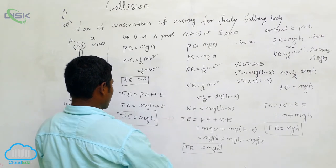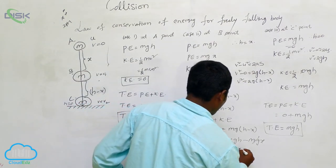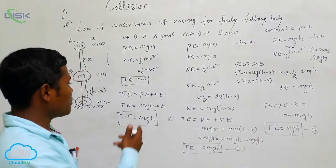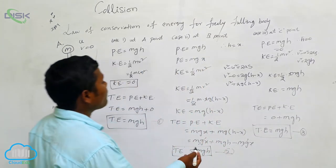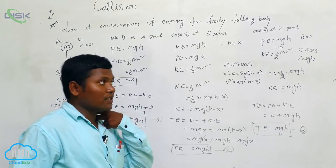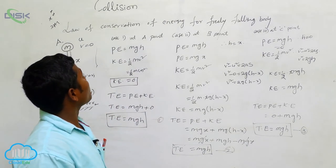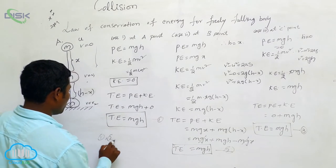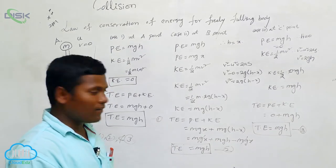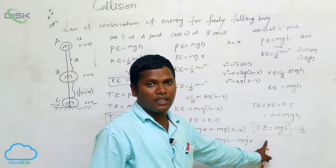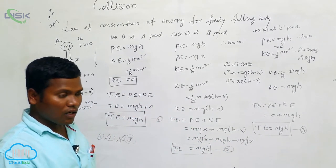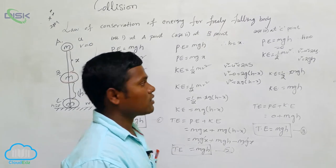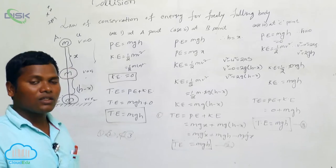From equations 1, 2, and 3, if you observe carefully, at every moment the energy is conserved. This is the conclusion for the law of conservation of energy for a freely falling body — the energy is conserved at every point. At point A, at point B, and at point C, in all cases you are getting the same total energy mgh. Therefore we can conclude that energy is constant, and that is why we say the entire universe's energy is constant. In this way we can prove that for a freely falling body, everywhere the energy is constant.